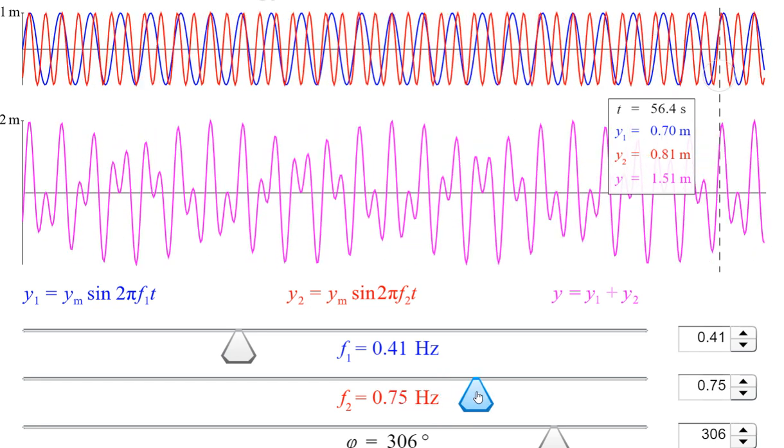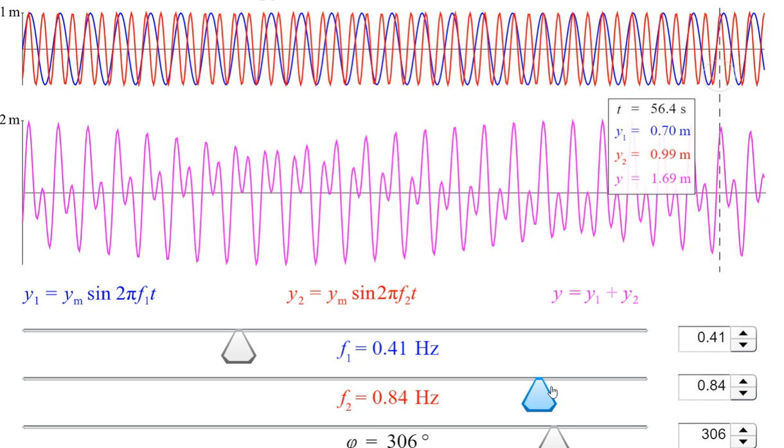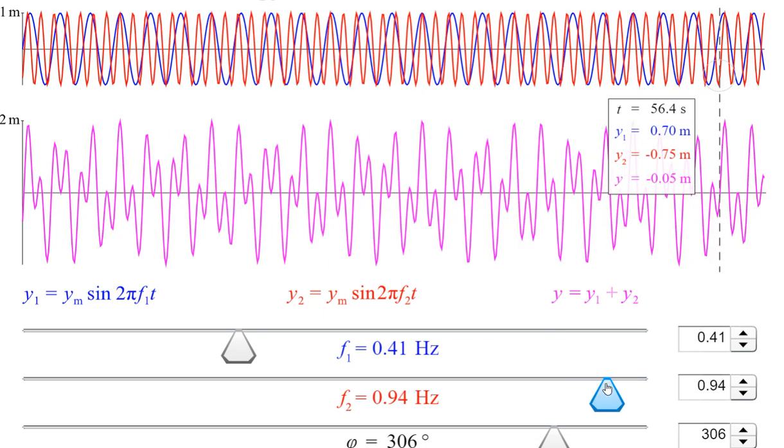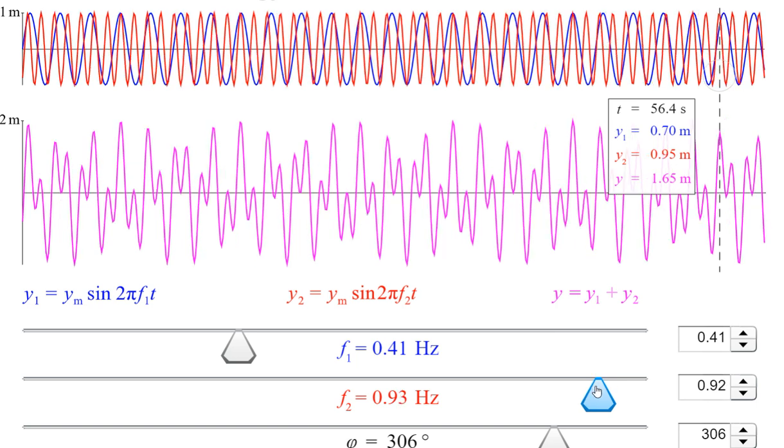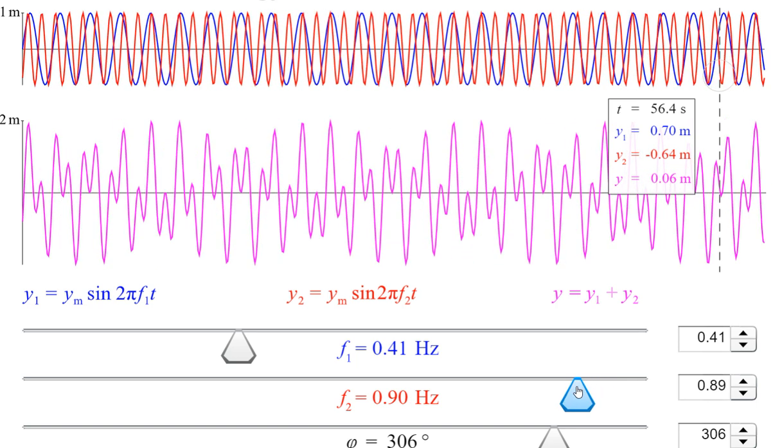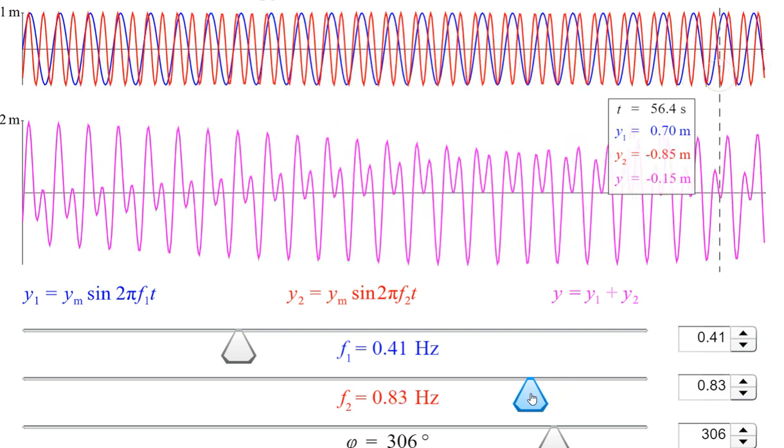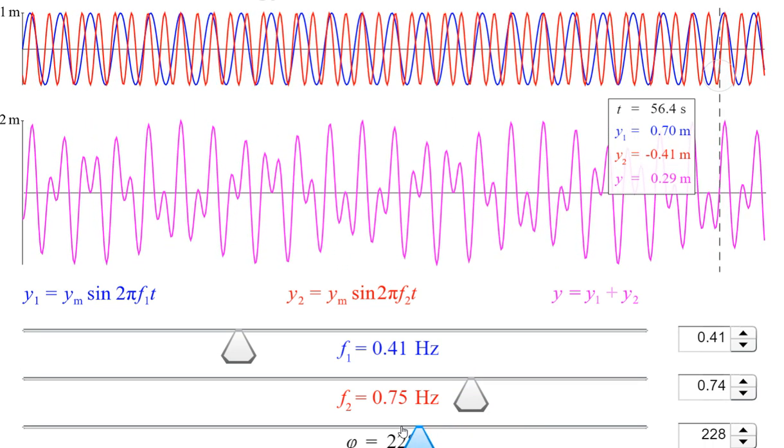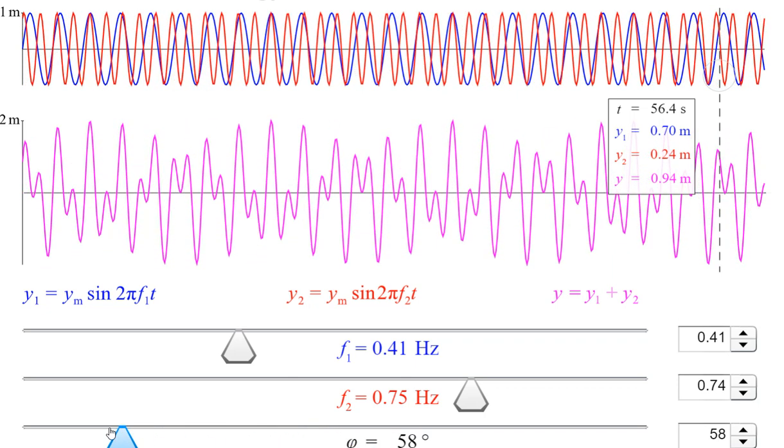So you can understand how the superposition works. This is the superposition of two individual waves, their harmonic oscillations. y1 equals ym sin 2 pi f1 t and y2 equals ym sin 2 pi f2 t. By varying the frequencies and other parameters like phase differences between the two oscillations.